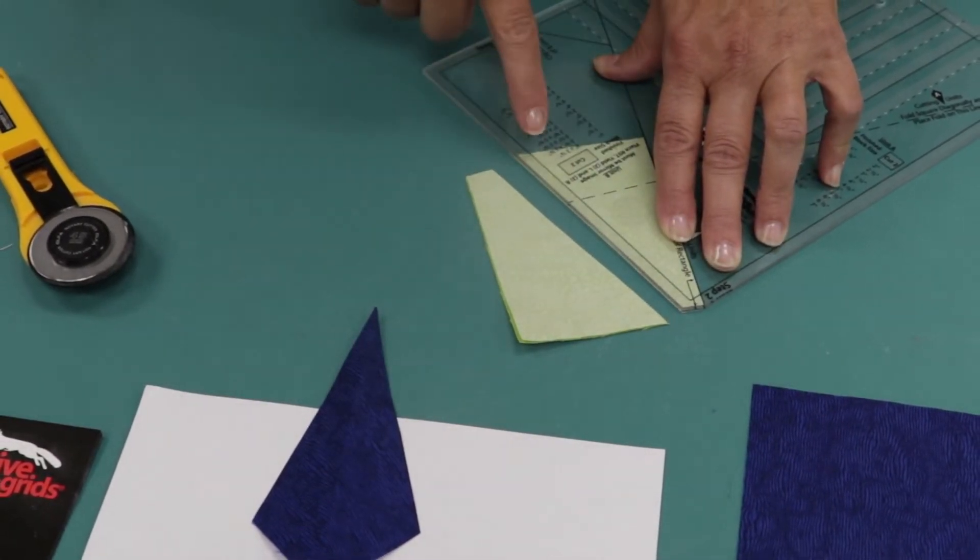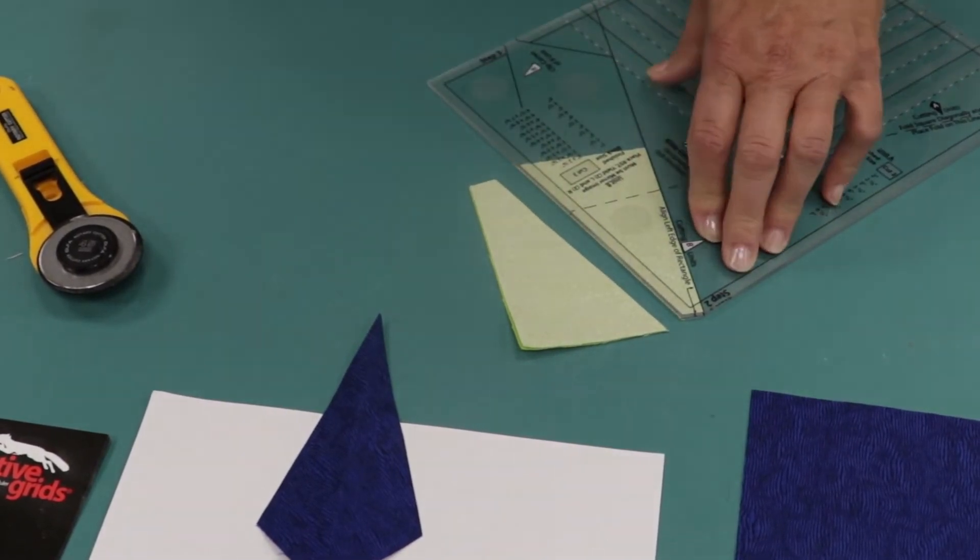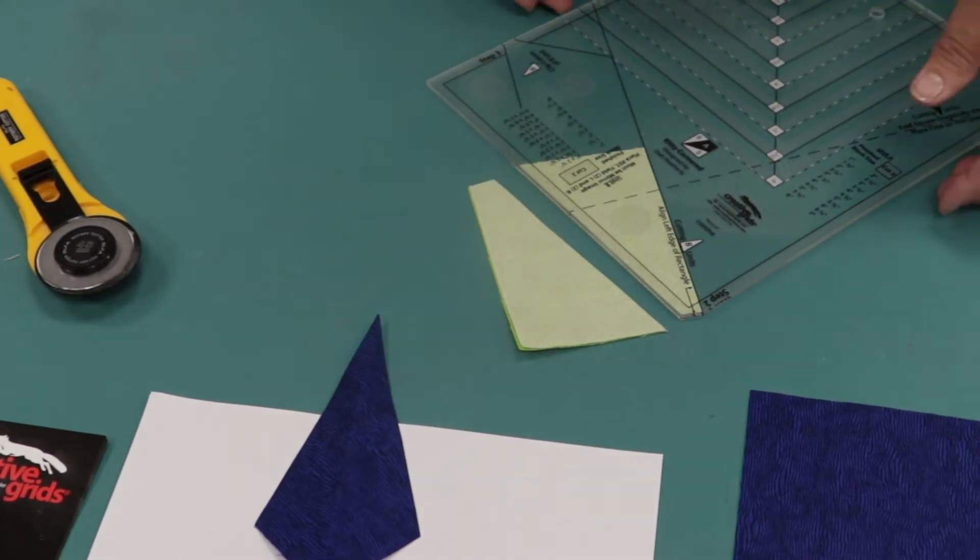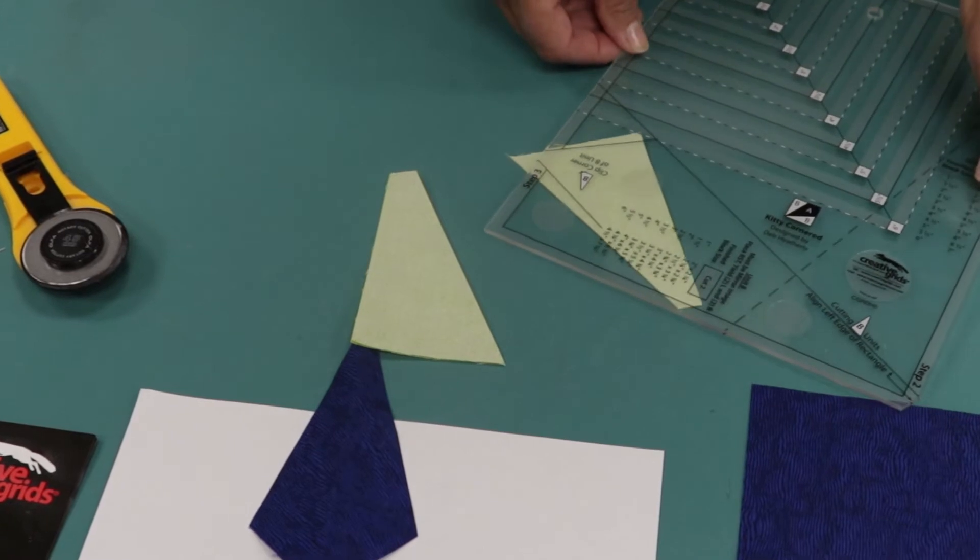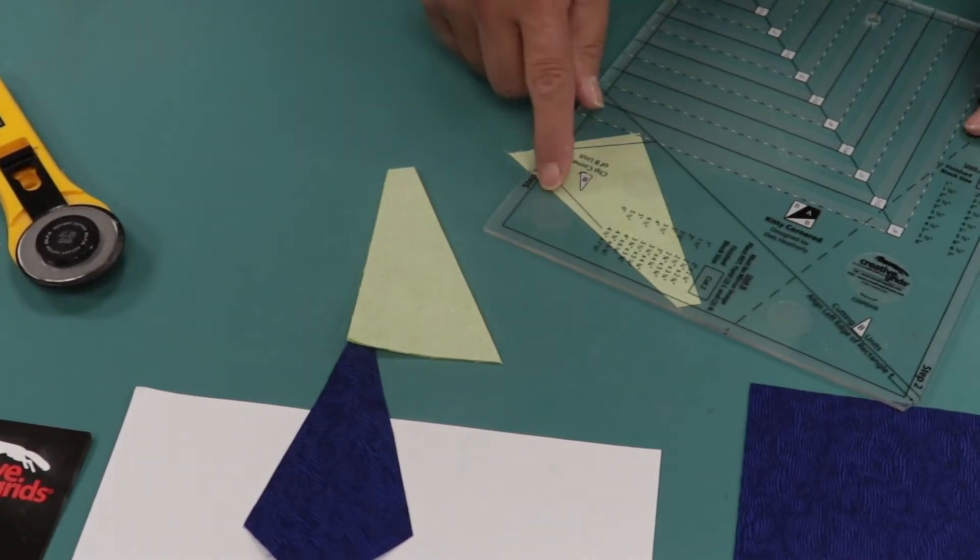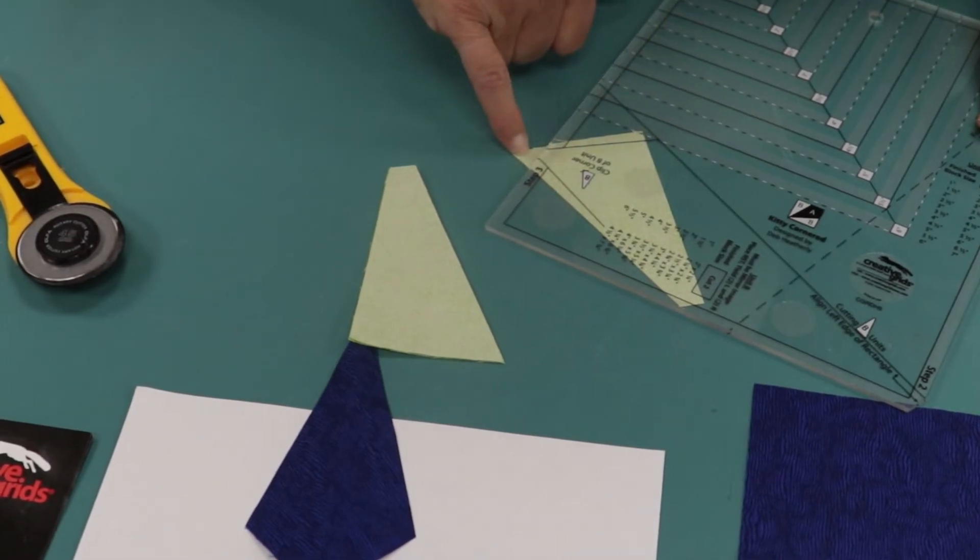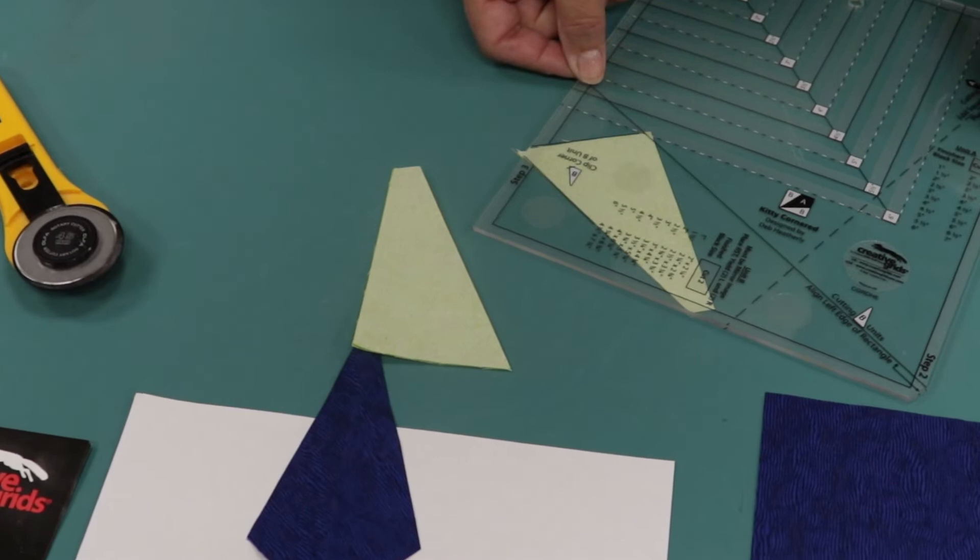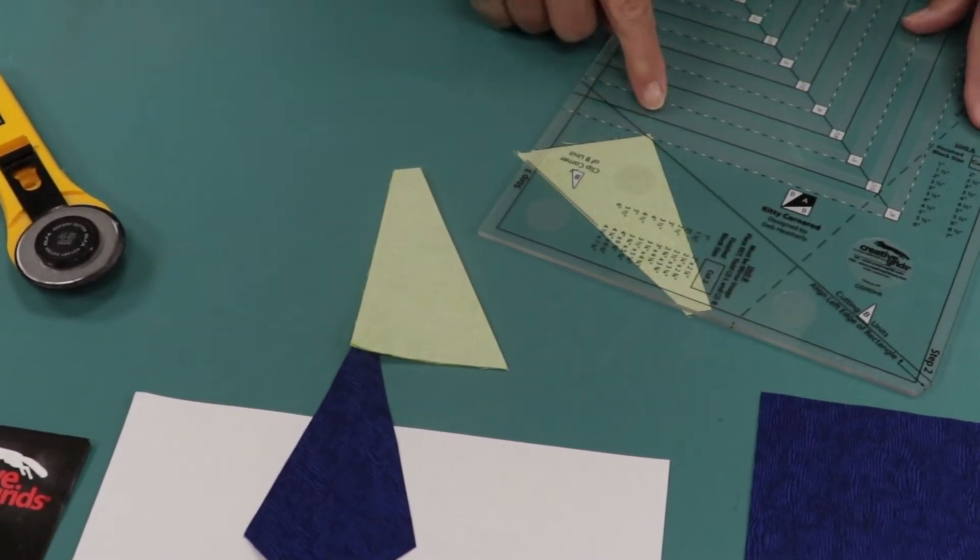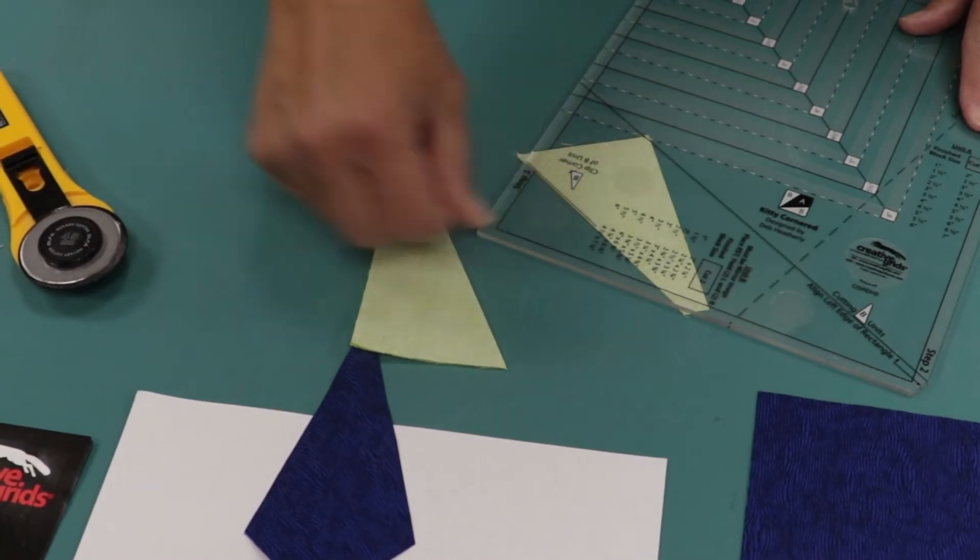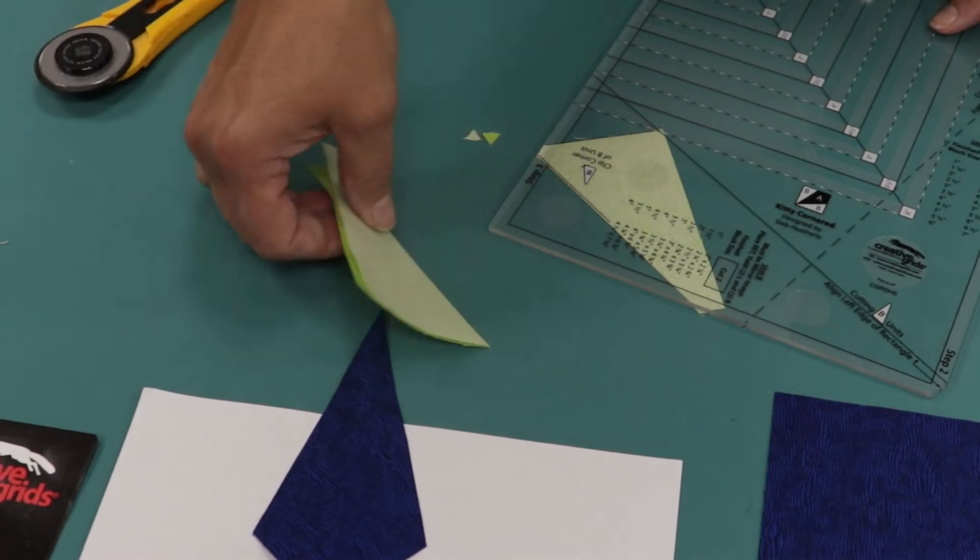Step two will cut the rectangles apart. But step three will trim this little corner right here. This corner and this corner. So it's really important to do both steps when you're working with the B unit. So I'm going to turn this ruler and here we're going to clip the corner of the B unit by lining up the edges of our unit and just nipping off the top of this excess that's hanging off the excess of the ruler.